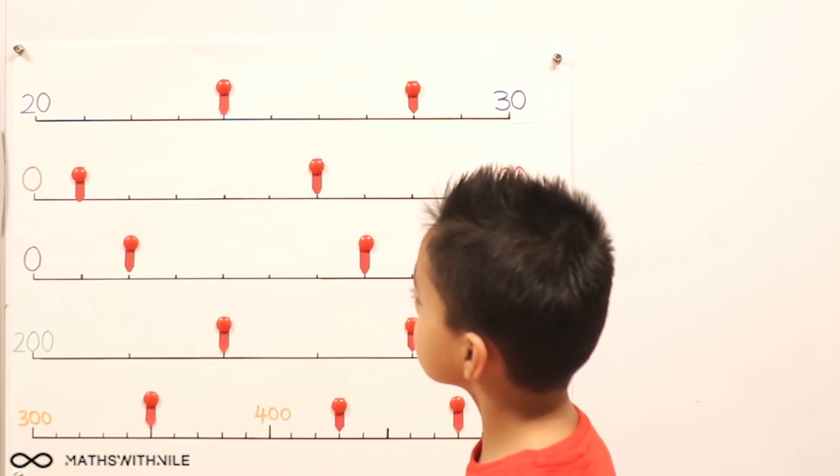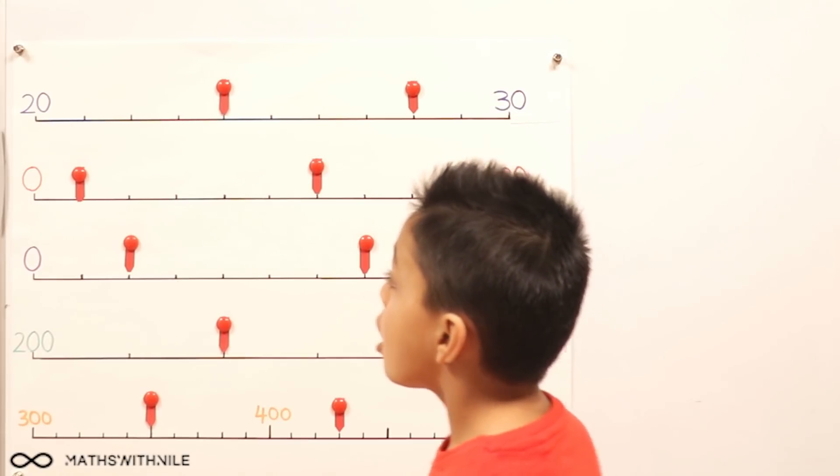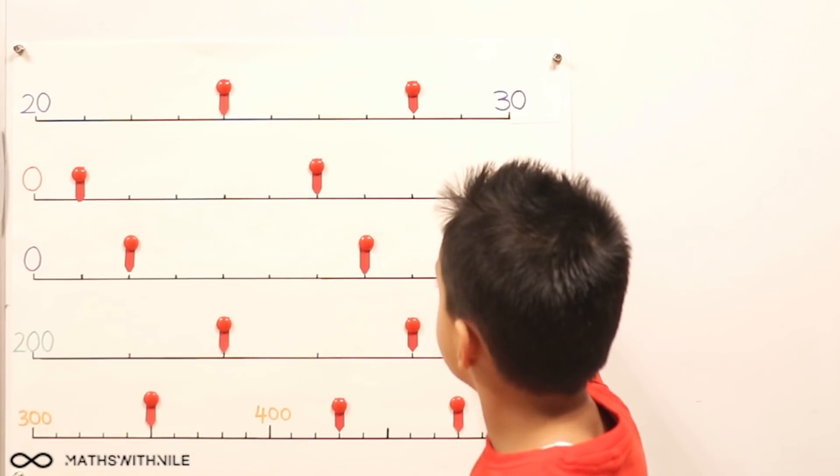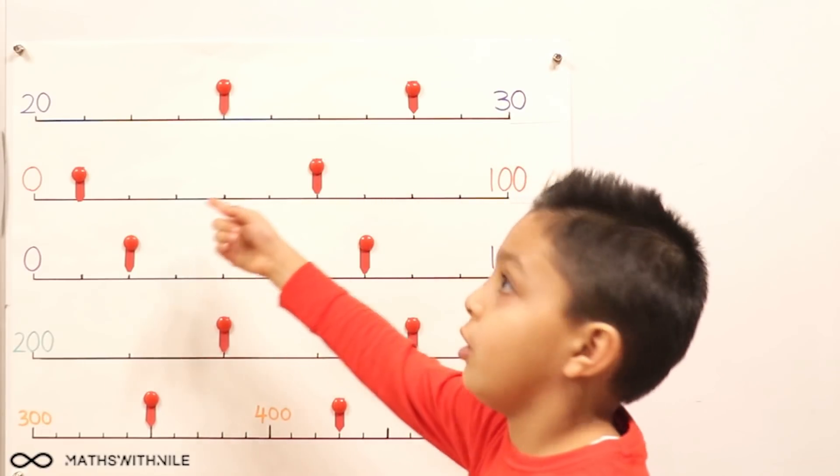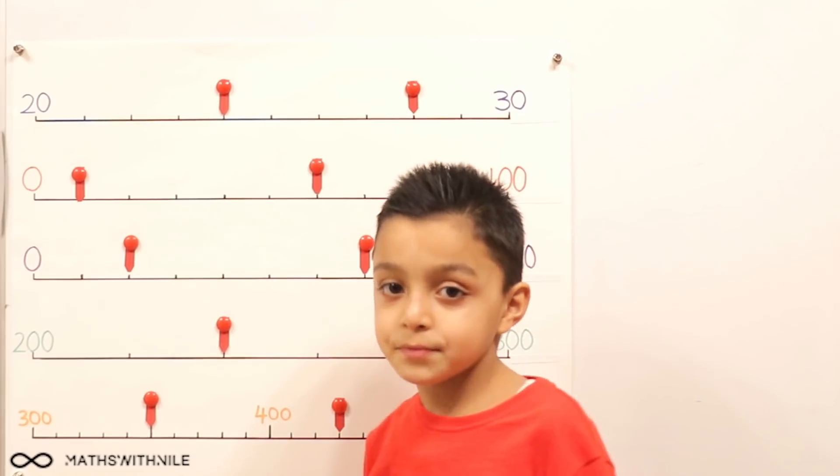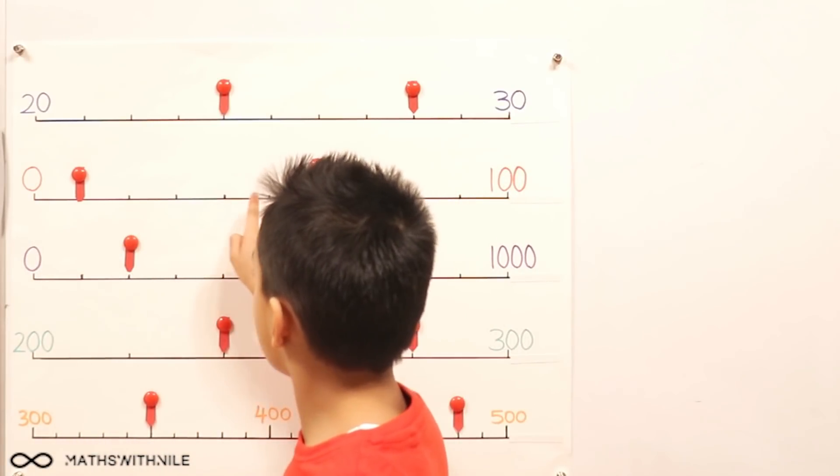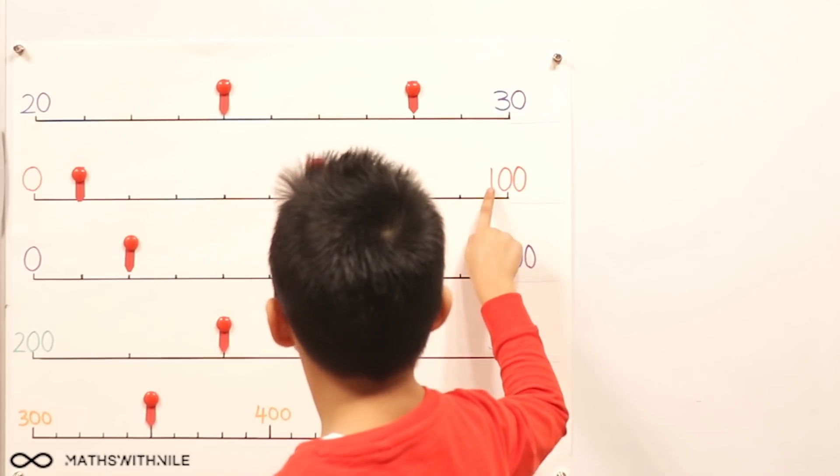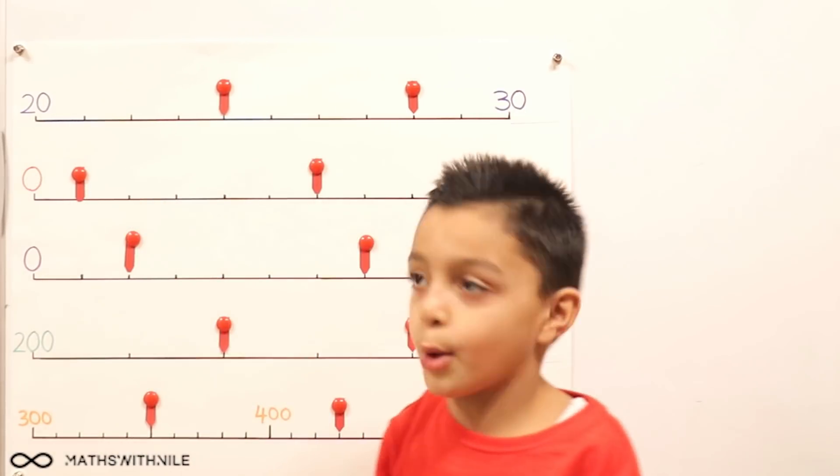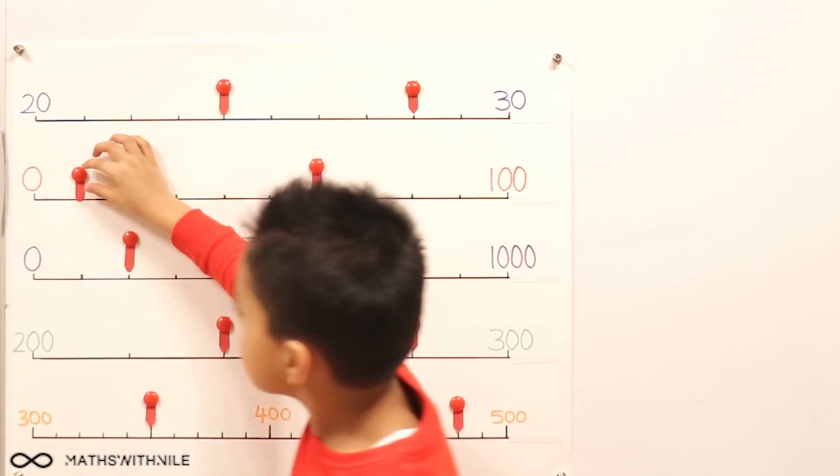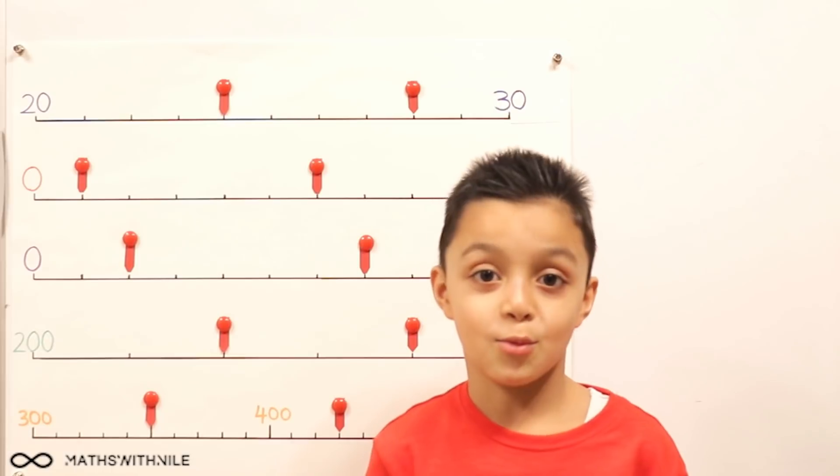Let's look at the second example now using the same method. First of all, figuring out how many spaces you have. So 0 to 100, the difference is 100, but obviously we can't fit 100 gaps. Okay, so it's definitely not going up in ones. So how many gaps do we have? One, two, three, four, five, six, seven, eight, nine, ten.